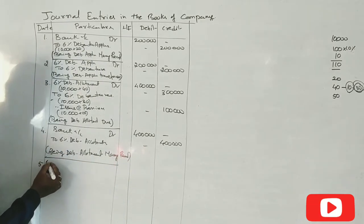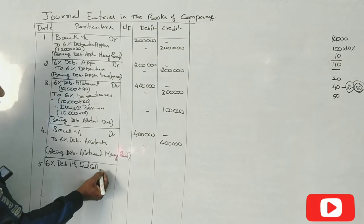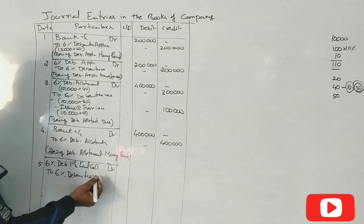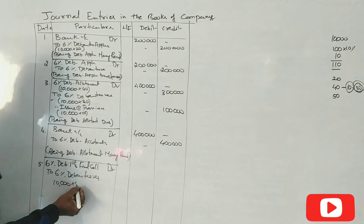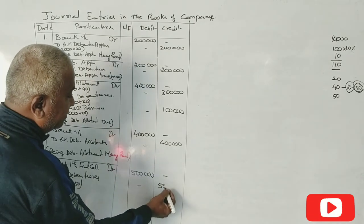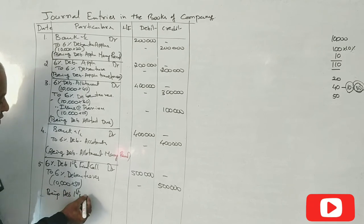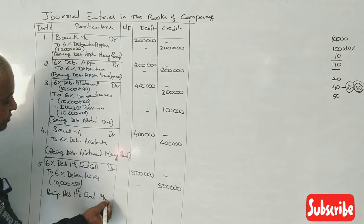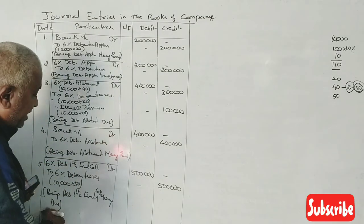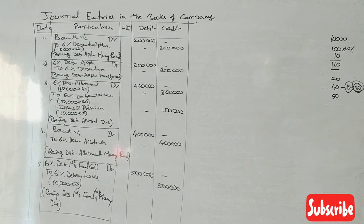Fifth journal entry — last general entry: 6% Debenture First and Final Call Account debit to 6% Debentures Account. 10,000 into ₹50 equals ₹5 lakhs. Narration: Being debenture first and final call money due.